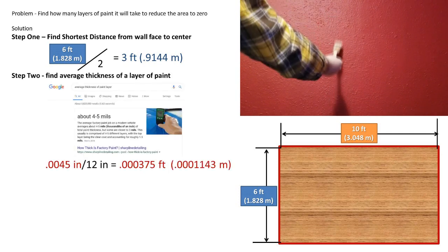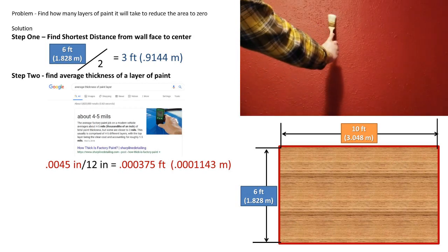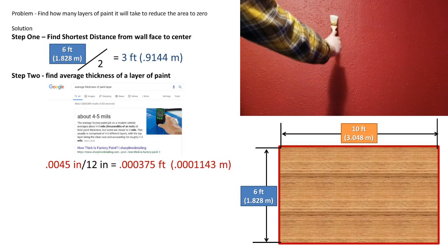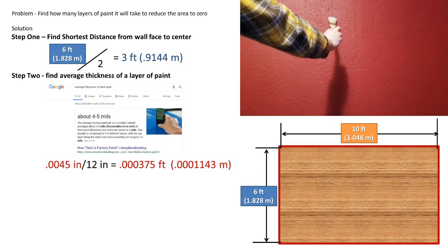Now we must use our friend Google to figure out what the average thickness of paint is. In this case, it is 4.5 thousandths of an inch, which equates to 0.000375 feet.